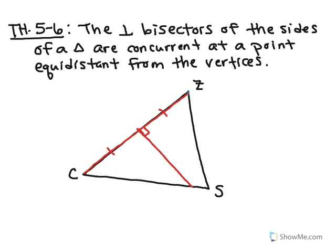Let's do ZS next. I'll bisect it first about right here — and remember, I'm eyeballing this; if you were to do this on your own, I expect you to measure. I'm going to let this go all the way across. That's my right angle, and this segment is congruent to this segment. And last but not least, CS. We're going to bisect that — looks like it's about here — make a right angle, and carry this all the way through. This segment is congruent to this segment. So I've done all of my perpendicular bisectors.